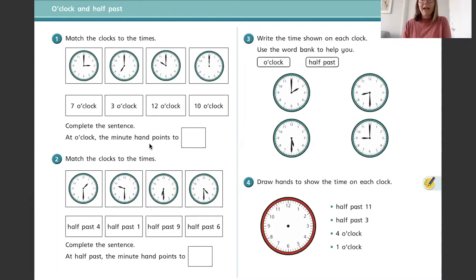And then where is the shorter hour hand pointing to? Because that will tell you that hour. Complete the sentence - at o'clock, the minute hand points to... which one does it point to? Does it point to the 12 or does it point to the six? Question two - match the clocks to the times. Here you have got half past times. So we've talked about o'clock being 12 and half past the minute hand points to the six. So then you just need to look at the hour hand.